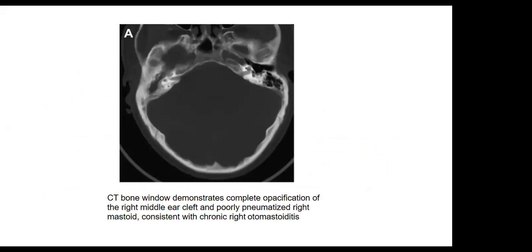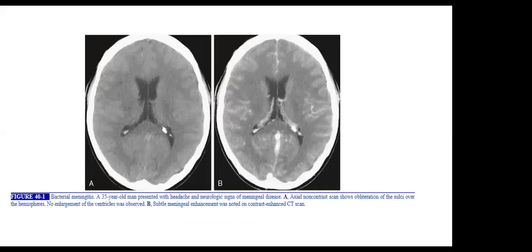A case of meningitis: CT bone window demonstrates complete opacification of the right middle ear cleft and poorly pneumatized right mastoid, consistent with chronic right otomastoiditis as a predisposing factor. In another case, a 35-year-old male presented with headache and meningeal signs. Non-contrast CT shows effacement of the sulci, and post-contrast CT shows leptomeningeal enhancement.